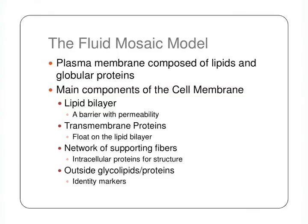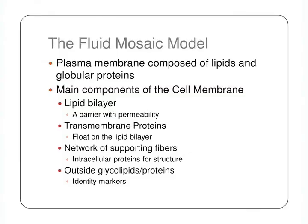Next let's take a look at the fluid mosaic model. The plasma membrane is composed of lipids and many globular proteins. These proteins are on the phospholipid bilayer because they allow passageways for substances to go through, and the amount of proteins can vary depending on the type of membrane. The main components of the cell membrane include the lipid bilayer, transmembrane proteins which span the whole distance of the bilayer, a network of supporting fibers similar to actin in the cytoskeleton that maintain membrane structure, and glycolipids and proteins on the outside that act as identity markers.